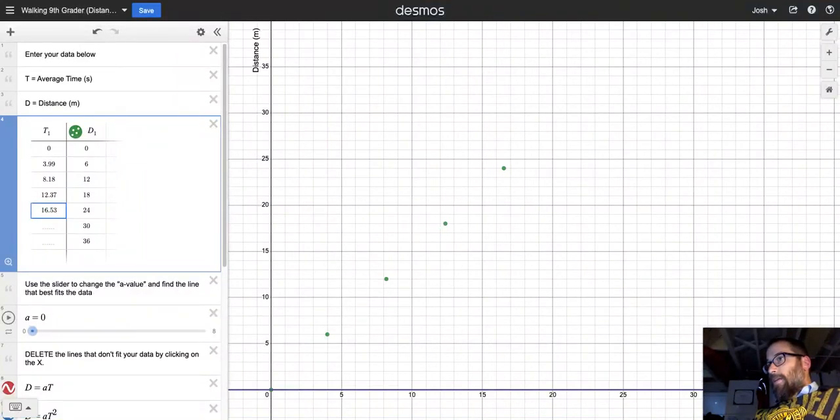As I enter that data, on the xy-axes on the right you can see the coordinates appearing. And if you hover your cursor over the coordinate or click on it, it will give you the actual data point. So the first point says that at 3.99 seconds the walker had traveled six meters.